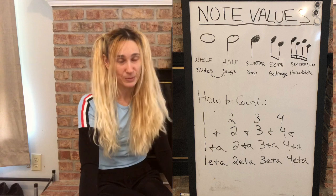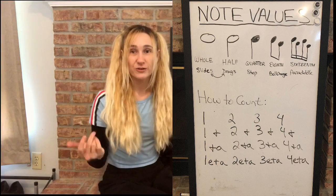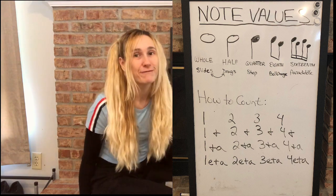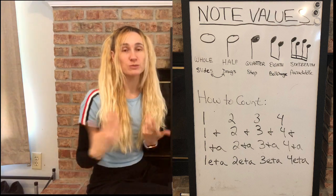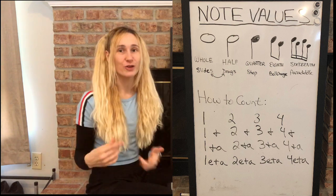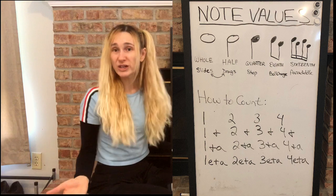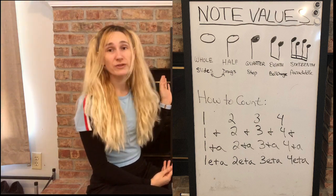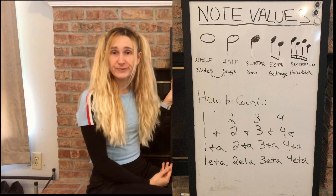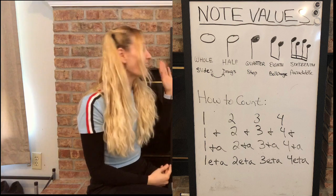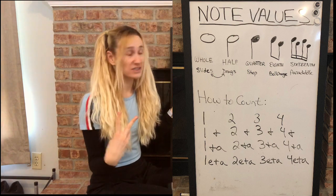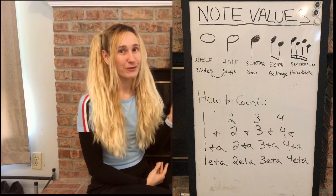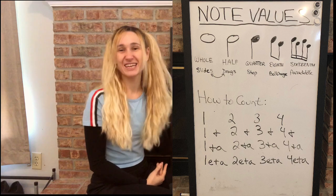The first thing I want to talk about is note values. These are your basic five that you're going to use as a tap dancer — there are more, but these are the core ones. You have a whole note, which is four beats. You have a half note, which is two beats. You have a quarter note, which is one beat. You have an eighth note, which is half a beat each. And then you have sixteenth notes, which are a quarter of a beat each.